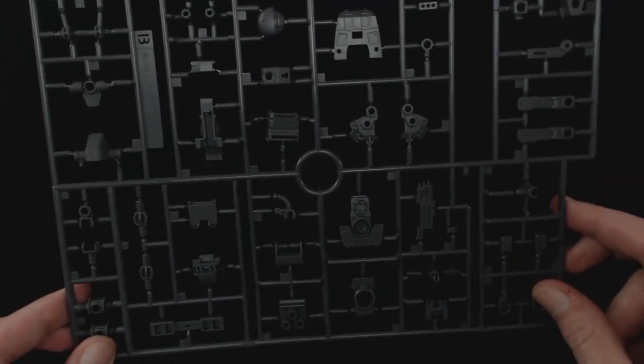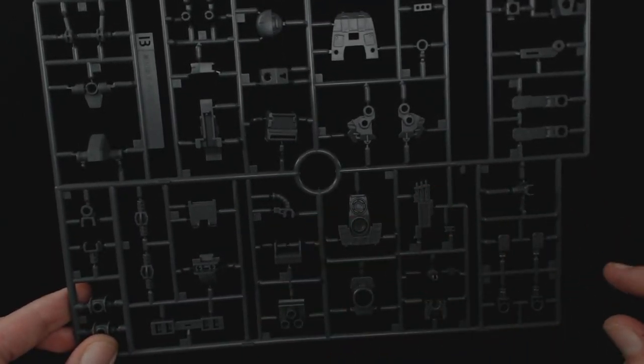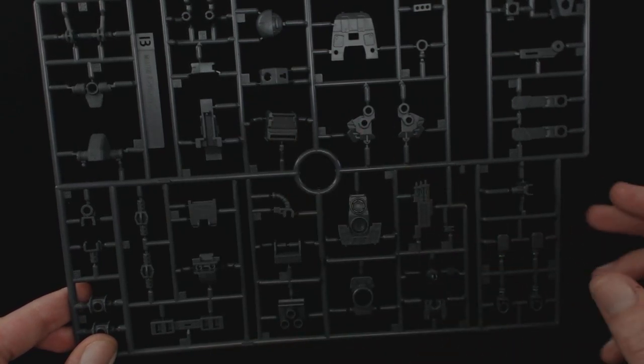Runner B, you get two of. These are going to have your feet sections, arm sections, joints, all that kind of stuff.